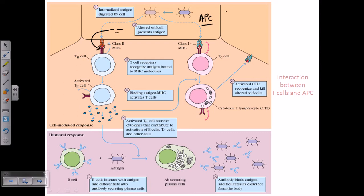The kind of cell that showcases peptide molecules with MHC class 2 is called an antigen presenting cell, or APC. Usual examples of APCs include macrophages, B cells, and dendritic cells. These antigen presenting cells present the peptide fragment to cells like the T helper cell.